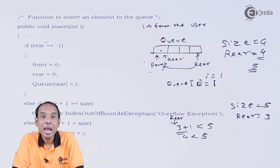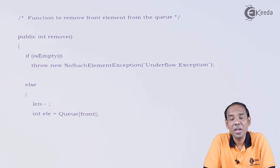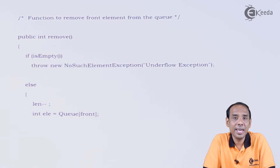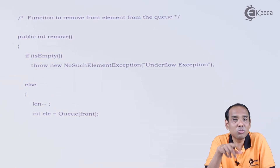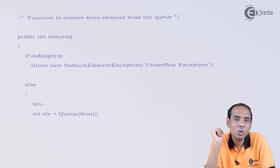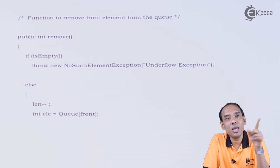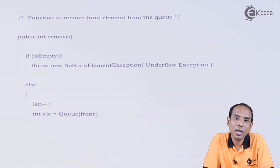Now we will look at the next important function: deleting an element from the queue. To delete, we always need to check the positions of front and rear. If the queue is empty — isEmpty is true — it is not possible to delete, since at least one element needs to be present in the queue.